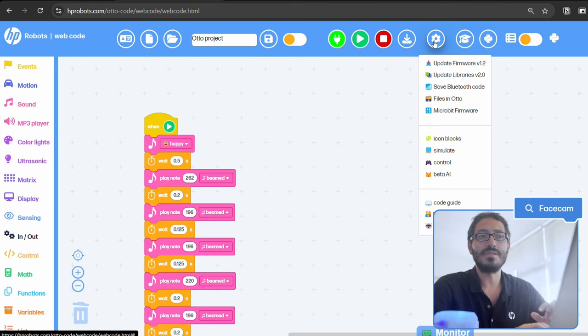And you have different settings for updates, for using Bluetooth, for checking the files and so on. Here you can also access the other modes. So we can go into simulate mode.